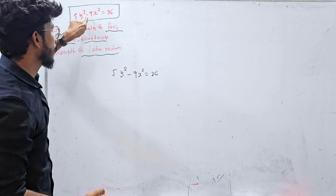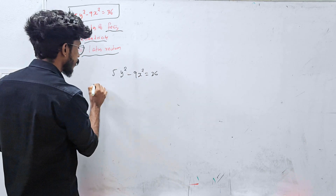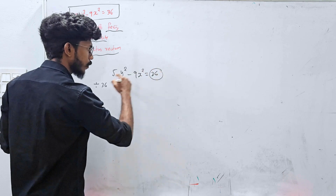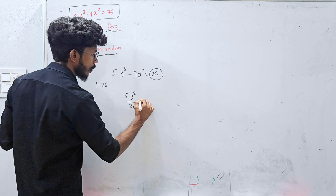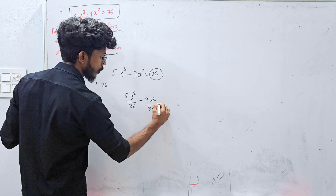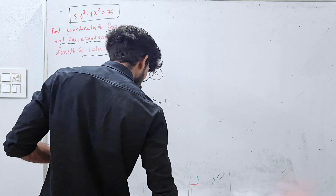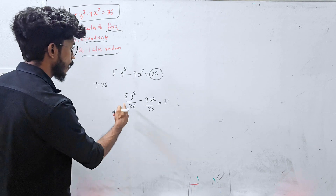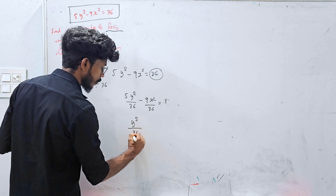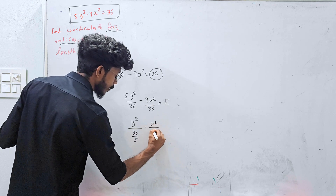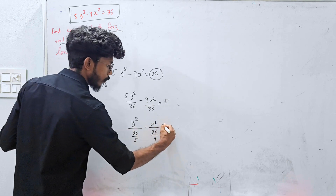If you think of hyperbola, the equation is equal to 1, so you divide throughout by 36. Dividing throughout: 5y²/36 minus 9x²/36 equals 1. So y²/(36/5) minus x²/(36/9) equals 1.